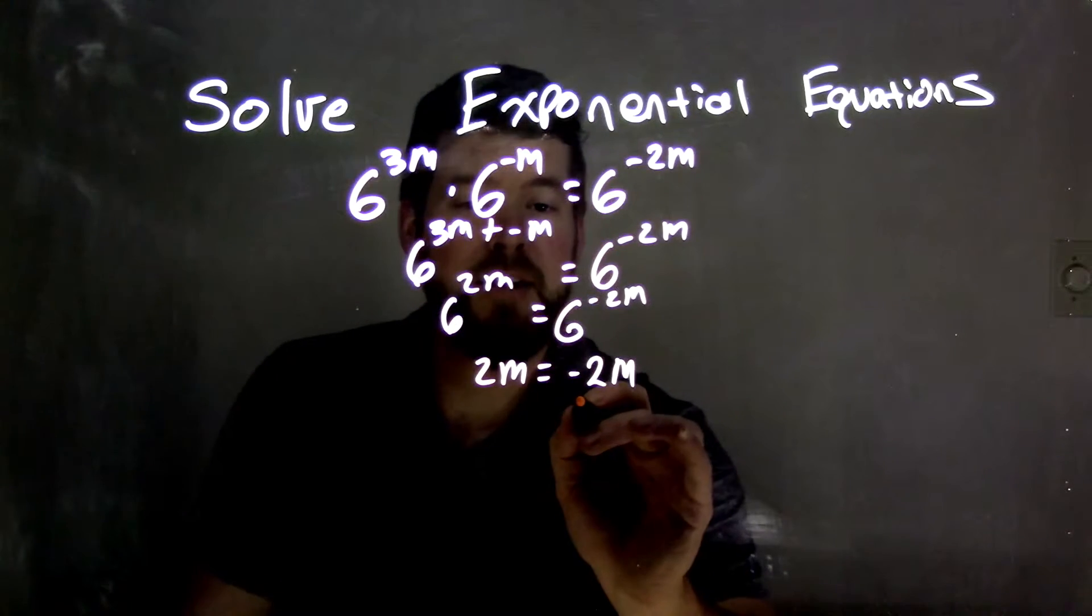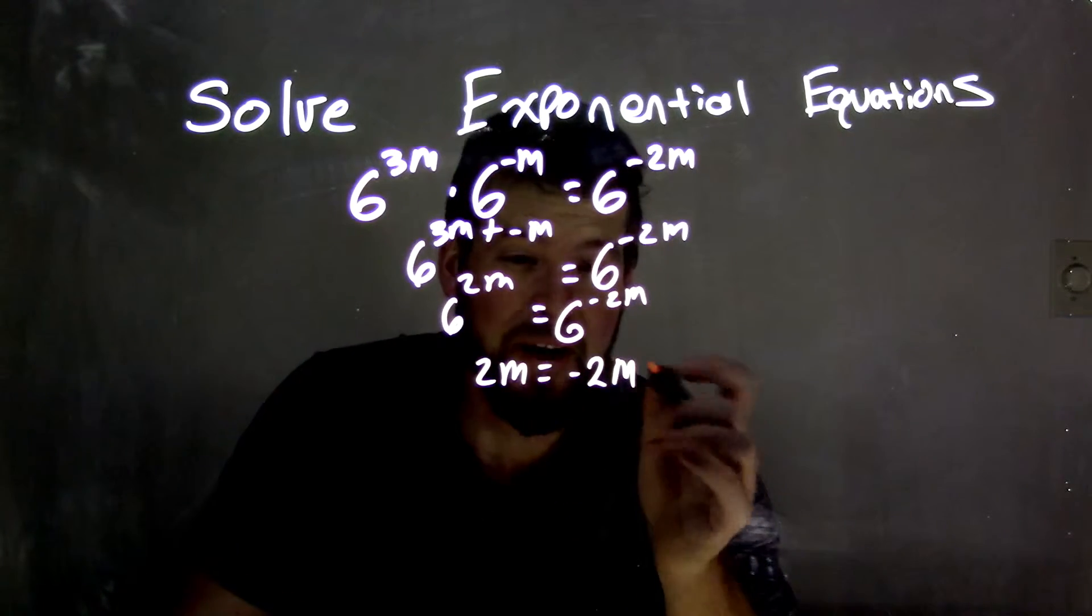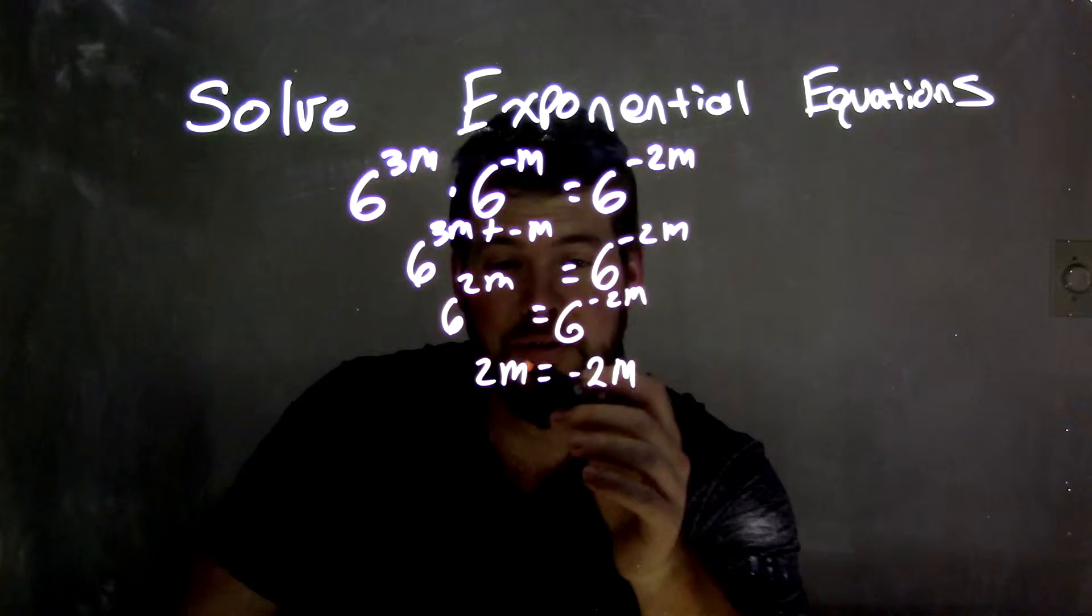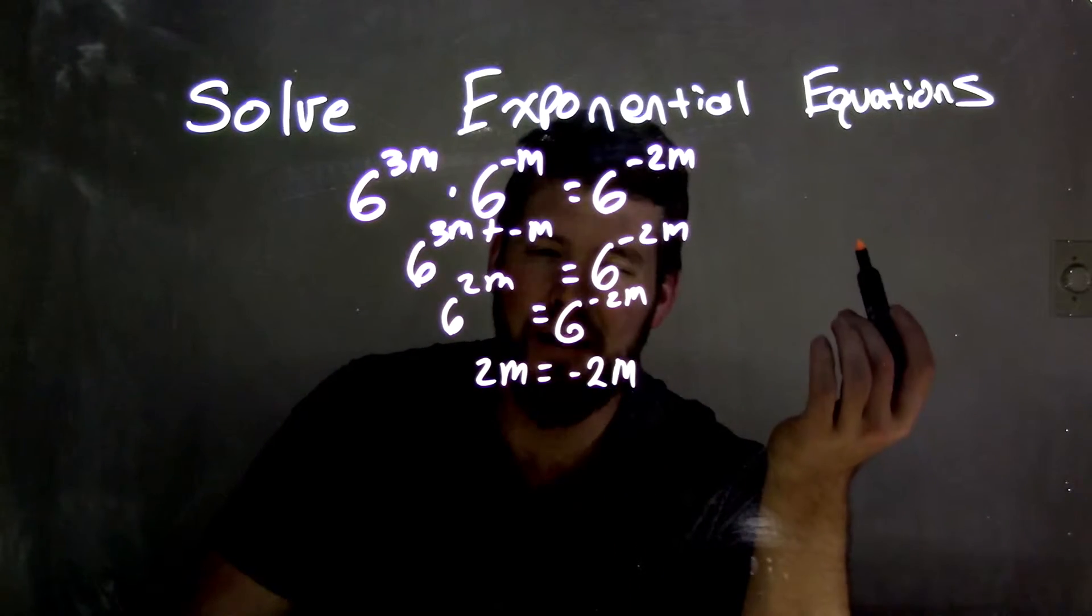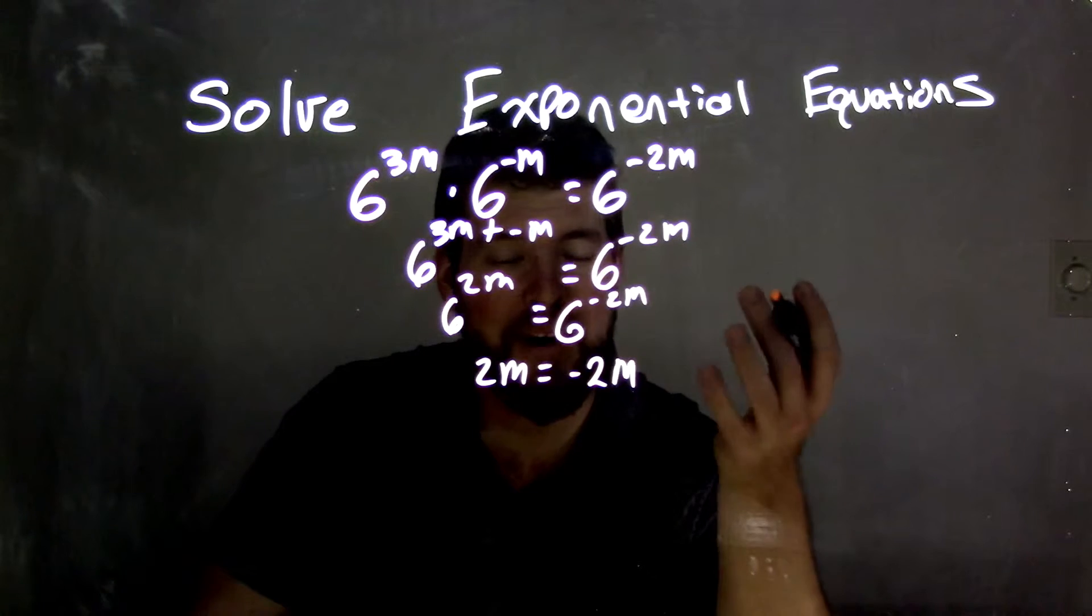I added 2m to both sides, but really, we should be able to think: what number times 2 equals negative 2 times that number? The only number that works for that is 0.